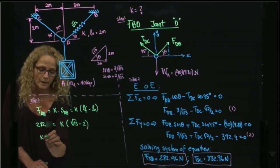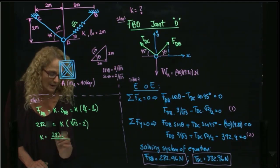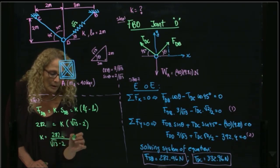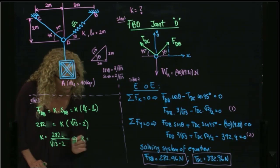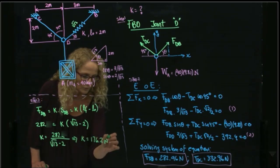So I solve for k, will be 282.96, divided by the square root of 13, minus 2. And k is equals to 176.2 newtons over meters.